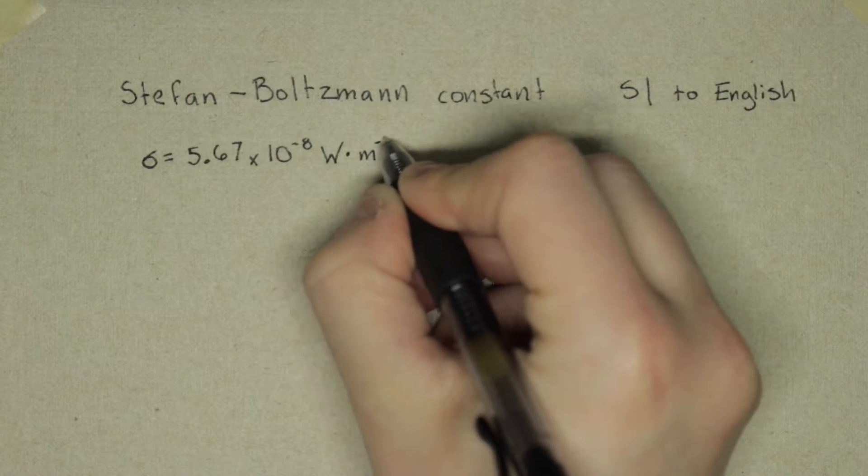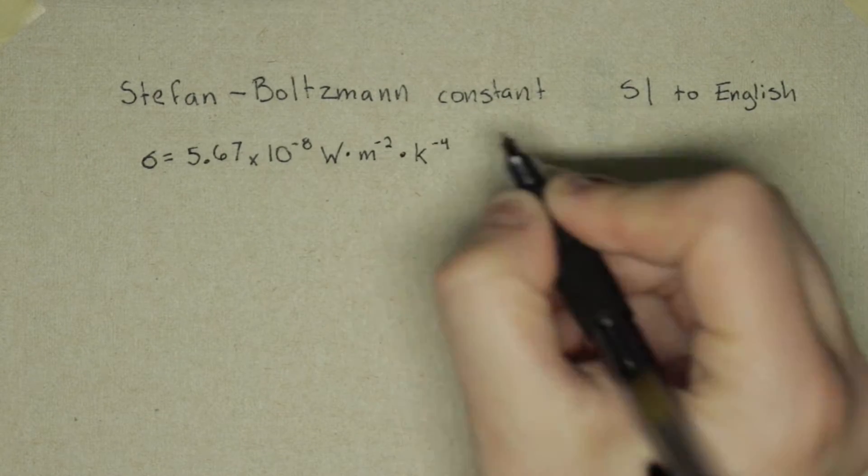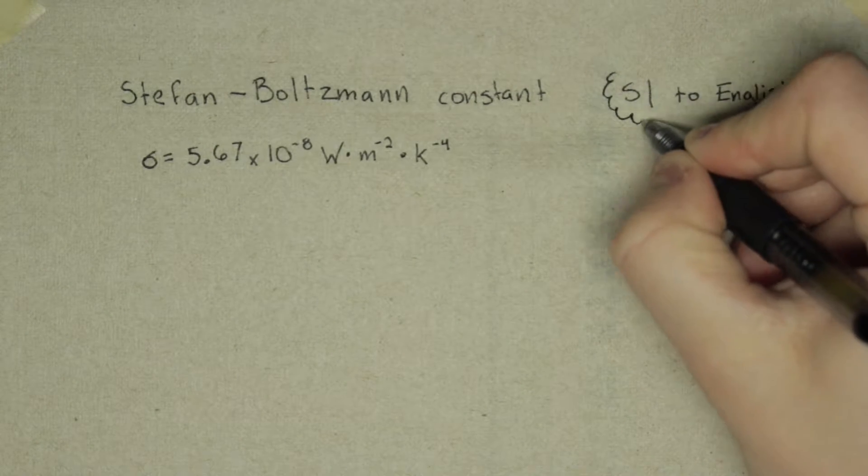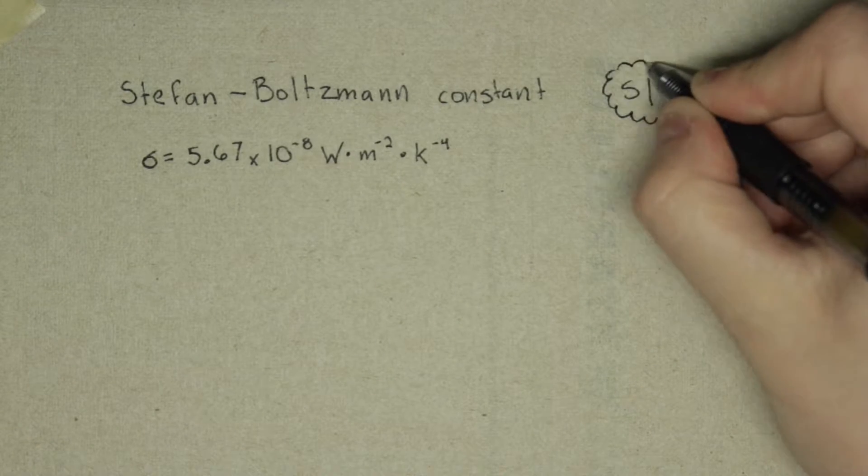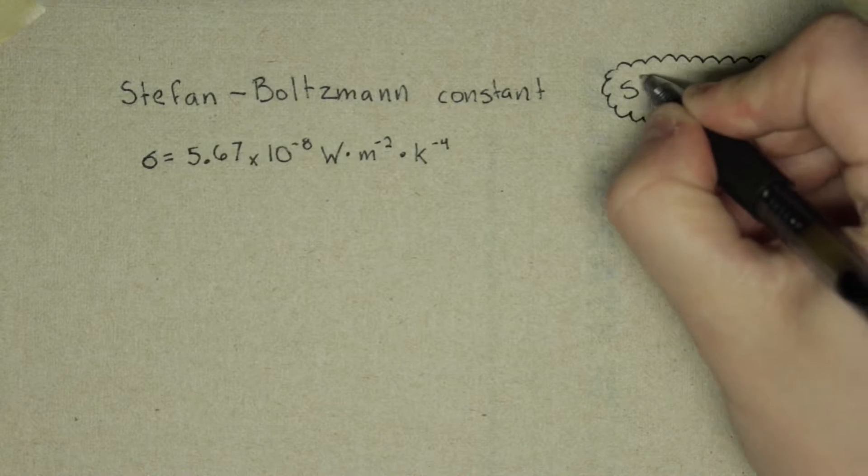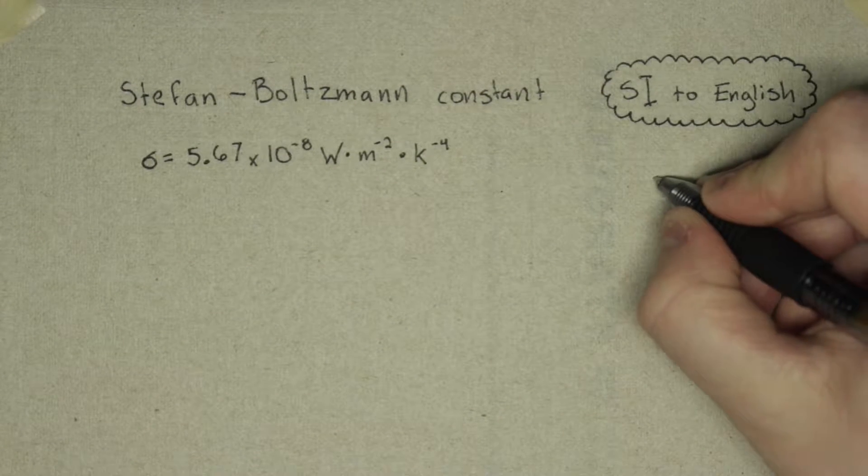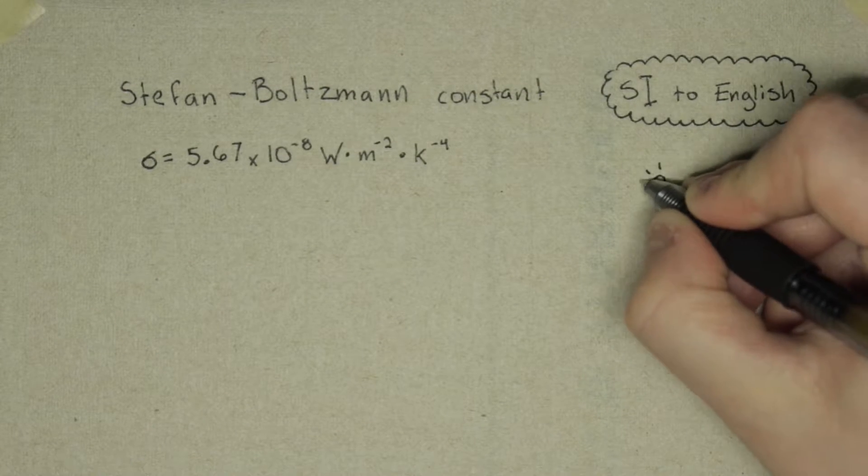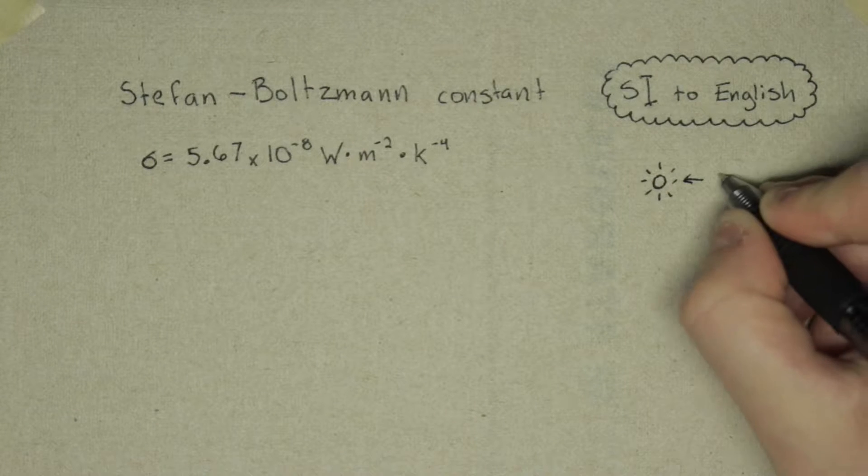This law basically says that the total energy radiated by the surface increases as the temperature of the black body increases. A black body is an idealized physical body that absorbs all incident electromagnetic radiation regardless of frequency or angle of incidence.